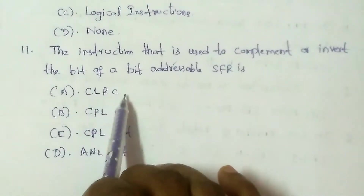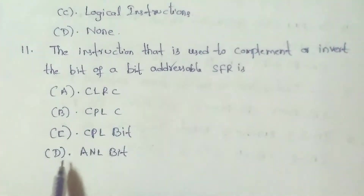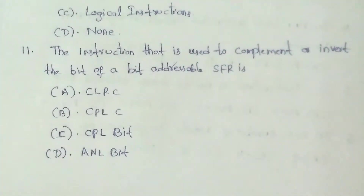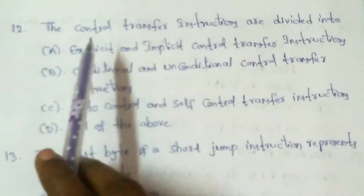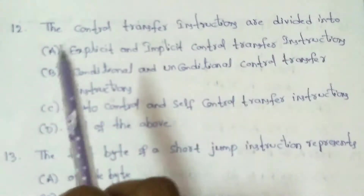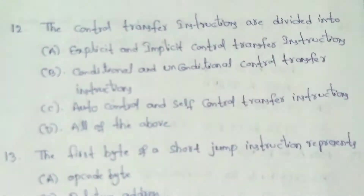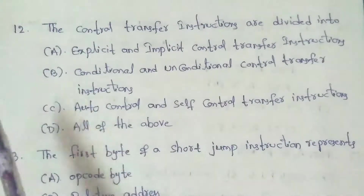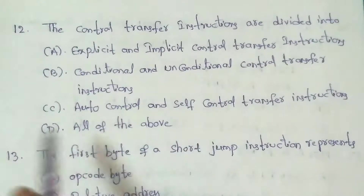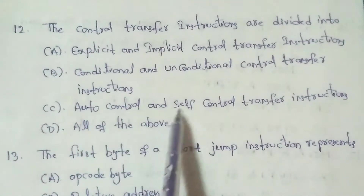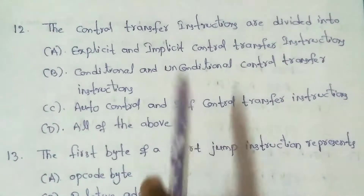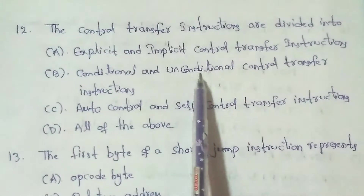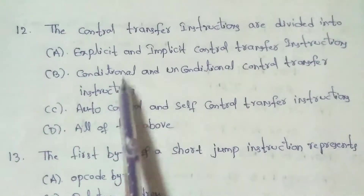Next question: Control transfer instructions are divided into which categories? Options: A) Explicit and implicit control transfer instructions; B) Conditional and unconditional transfer instructions; C) Auto control and self control transfer instructions; D) All of the above. Control transfer instructions are divided into two types: conditional and unconditional. Option B is the right answer.